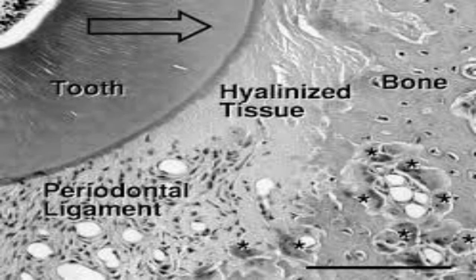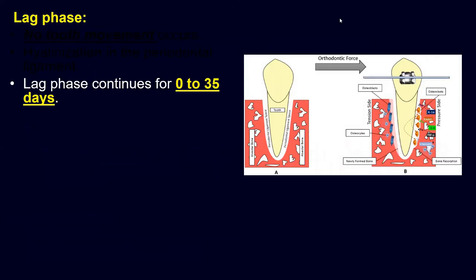Under the microscope, this necrosis area appears just like hyalinized cartilage — that is why the term 'hyalinized area' is used. It has nothing to do with actual hyalinized cartilage; the name comes from its microscopic similarity. This hyalinized area has to be removed for tooth movement to resume. The increased days of the lag phase are because if heavy forces are applied, they lead to development of a hyalinized area that must be removed in order to move the tooth.